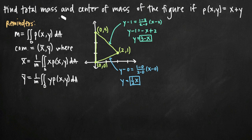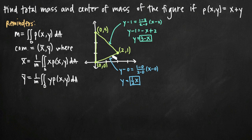In a problem like this where we need to find mass and center of mass and we've been given an equation for rho, the equations we're going to use I've written here in our reminder section. To find mass we're going to use the equation for m and take the double integral of our equation for rho. Then to find center of mass we need to find x-bar and y-bar — x-bar being the average value of all x values in the region, and y-bar the average value of all y values.